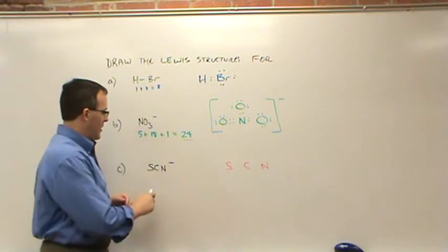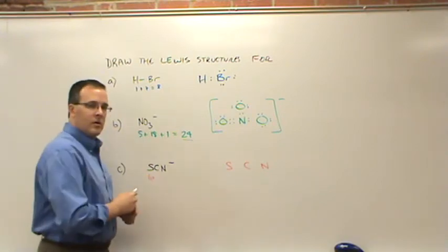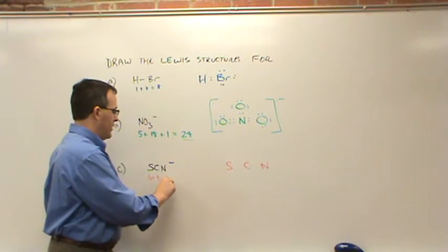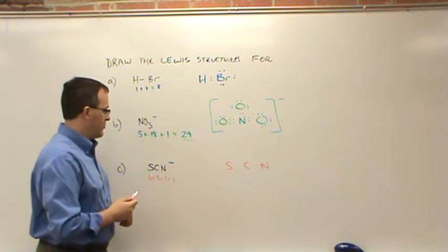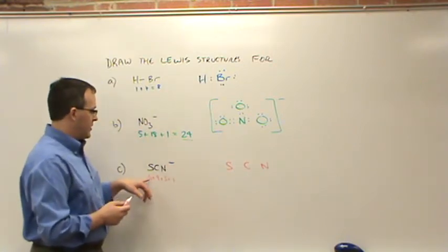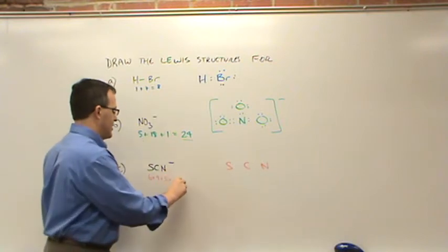S is in the same column as oxygen, so that's got six. Carbon's got four, nitrogen's got five, and then one more for the extra electron negative charge, and so that six and six is twelve, and four is sixteen total electrons.